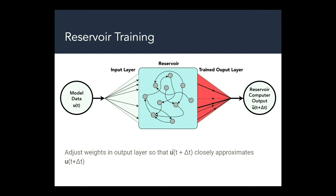Once you've input all of your training data to the reservoir, you then adjust the output weights of the output layer so that the reservoir computer outputs match the model data you found originally. This allows the reservoir to capture the dynamics of the system. The trained output layer is in contrast to the input layer in the reservoir, both of which are randomly generated.